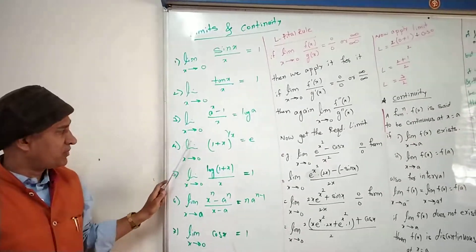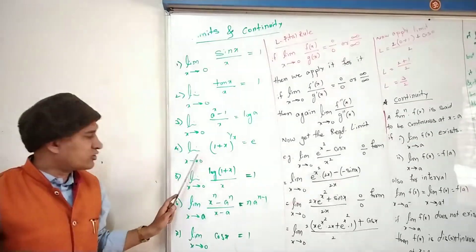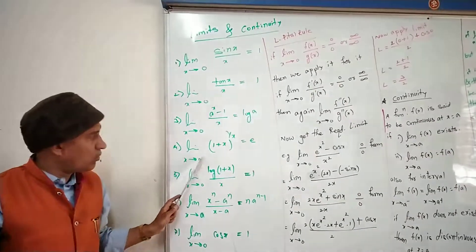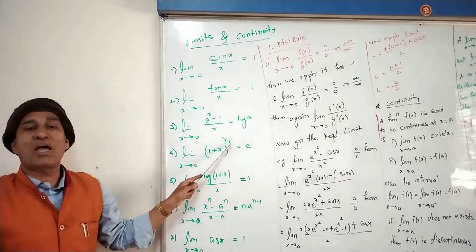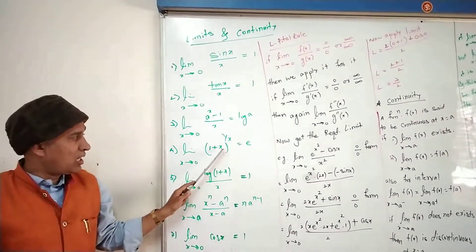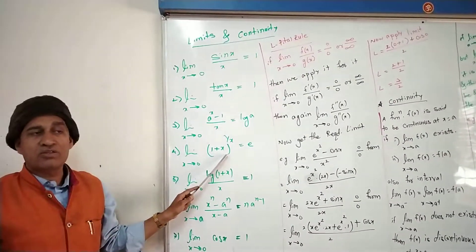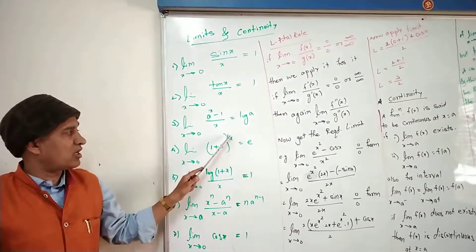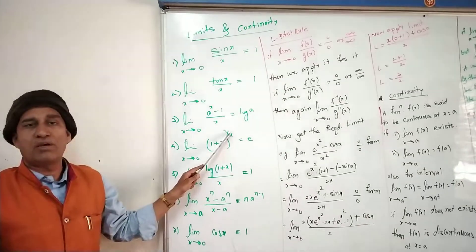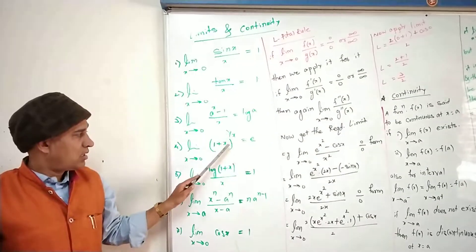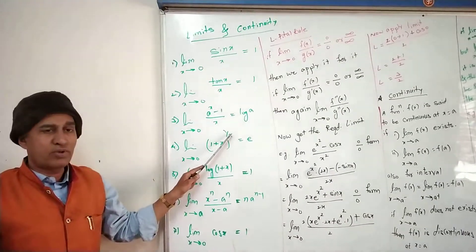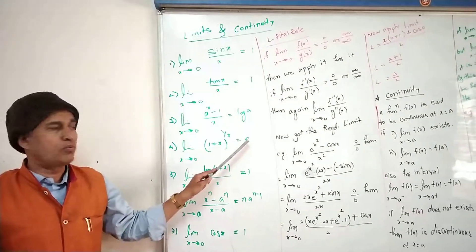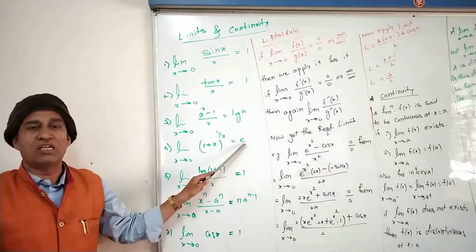Next standard limit: lim x tends to 0, (1 + x) to the power 1/x is equal to e. Note that whatever the number inside is, the power must be the reciprocal of that expression. For example, if the inside is 2x, then the power should be 1/(2x), and only then we can put e.